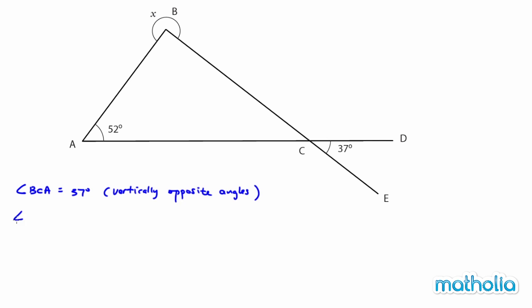Angle ABC will be 180 degrees minus 52 degrees minus 37 degrees, which gives 91 degrees. Reason: sum of angles in a triangle.